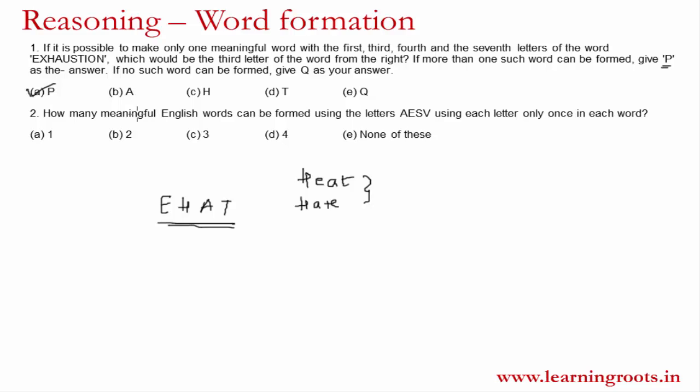In some cases, you might be asked to find the number of words that can be formed, which we see in the second question. The second question states: how many meaningful English words can be formed using the letters A, E, S, V, using each letter only once in each word? So all four letters must be used, and each used only once. The four letters are A-E-S-V.